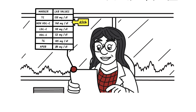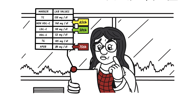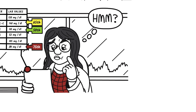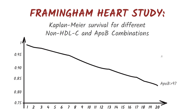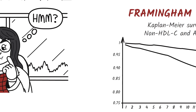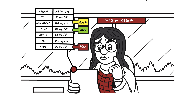Now let's take another example where non-HDL-C is at the 65th percentile and LDL-C is at the 50th percentile. On that basis alone, you might conclude that your patient does not present a high risk of cardiovascular disease. But when you measure ApoB, you find that it's at the 75th percentile. The Framingham Heart Study examined survival rates for patients with different non-HDL and ApoB combinations. It revealed that people with a higher ApoB have lower survival rates than those with lower ApoB levels, even though their non-HDL-C or their LDL-C was the same. And so your patient is, in fact, at a higher risk — but you would not have known this if you hadn't measured their ApoB levels.